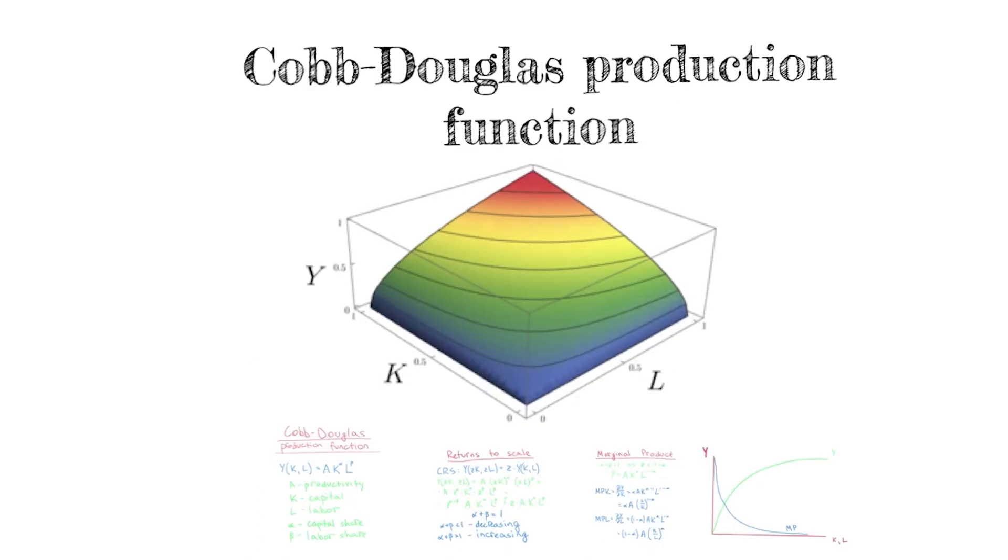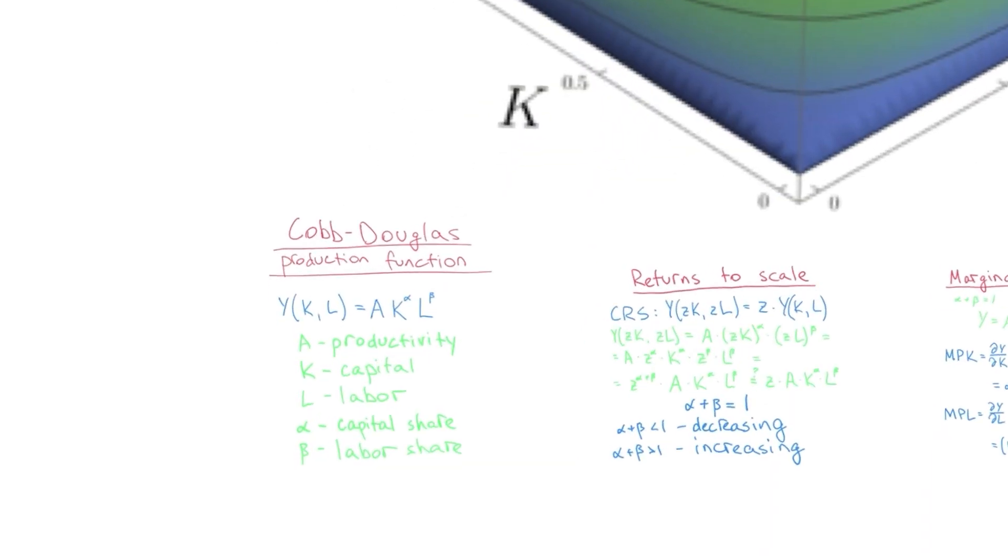Hey guys, so today we'll talk about the Cobb-Douglas production function, something that two economists came up with in the 30s and 40s and is still used to estimate production of firms and economies to this day. So what is it all about? Let's take a look at the basics.